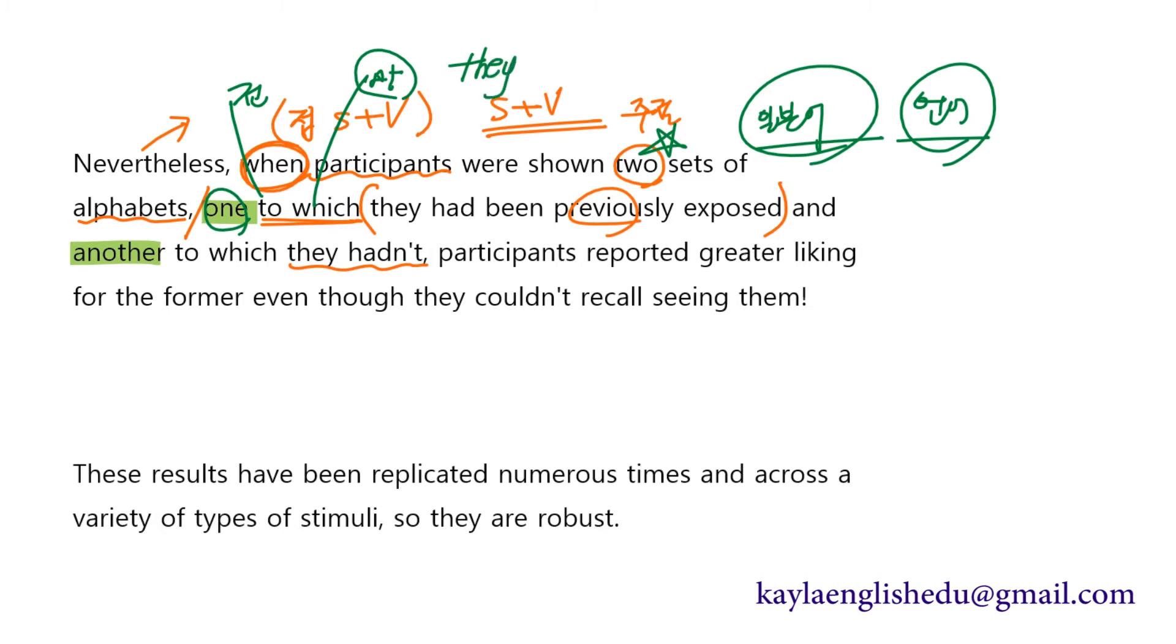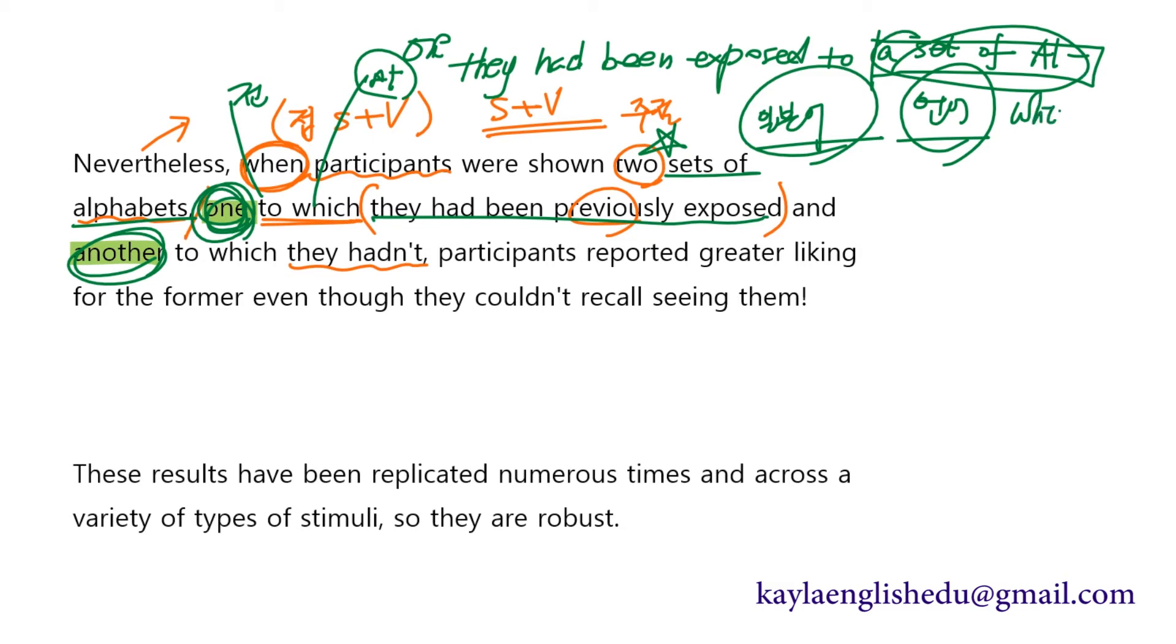원래 문장은 they had been exposed to a set of alphabet. 여기에서 a set of alphabet 이걸 지금 one으로 one another 하는 대명사로 바꿔서 날라간 거고 그 다음에 앞에 이 one이라고 한 대명사가 있는 거고 a set of alphabet이 관계대명사 위치로 바뀌어서 앞으로 one 다음으로 들어갔는데 또 뭐가 있어요? 이 전치사 to가 나도 같이 데려가 하면서 to which 이 순서 그대로 가서 one to which they had been exposed 이렇게 나온 거예요.